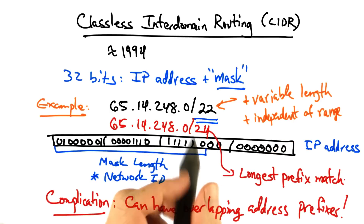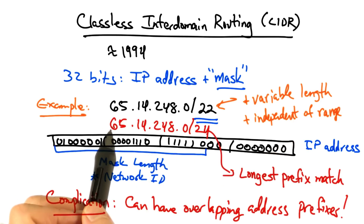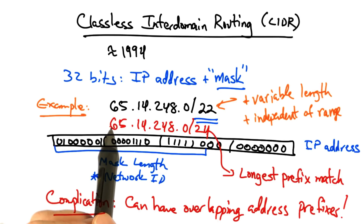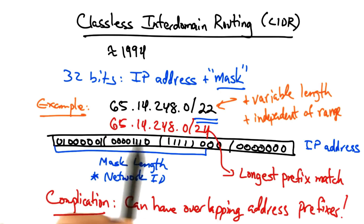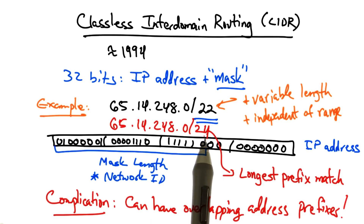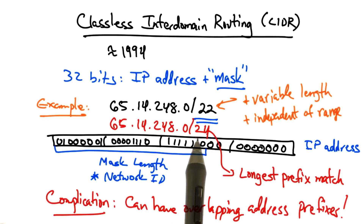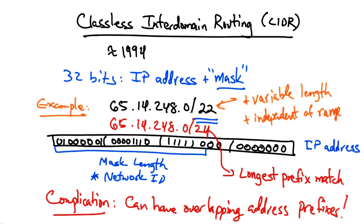The solution is actually to forward on what's called the longest prefix match, meaning that if a routing table has two overlapping entries, it should forward according to the entry that has the longest prefix, or the longest mask length. Intuitively that makes sense because the prefix with the longer mask length is more specific than the prefix with the shorter mask, or the larger prefix.